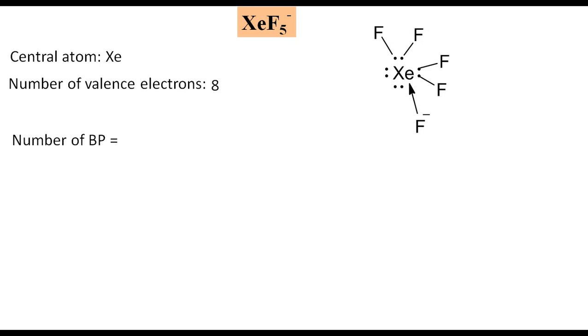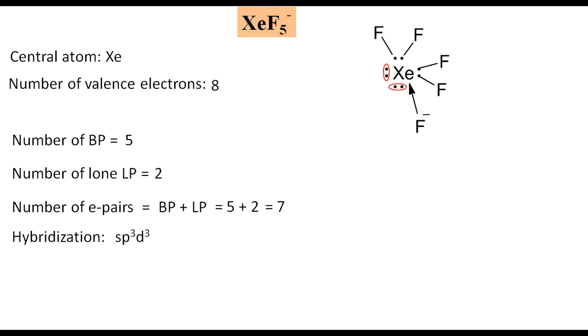So the number of bond pairs is 5. Number of lone pairs is 2. So the number of electron pairs, which is equal to the sum of bond pairs and lone pairs, will be equal to 5 plus 2 equals 7. So hybridization will be sp3d3.